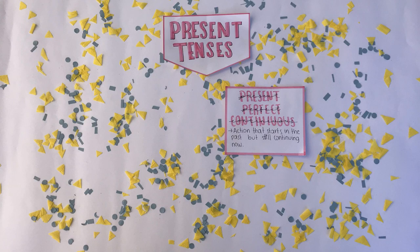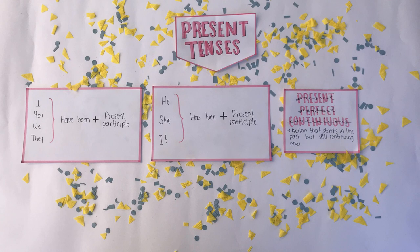Present perfect continuous describes an action that starts in the past but still continues now. For example, you have been working on it.